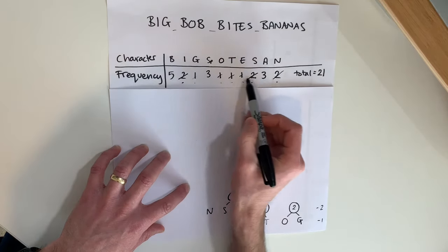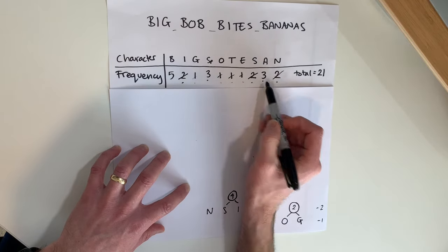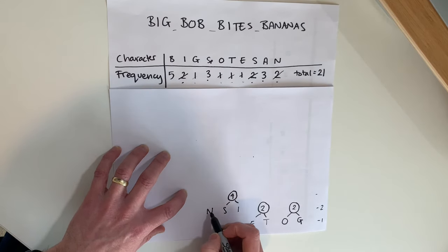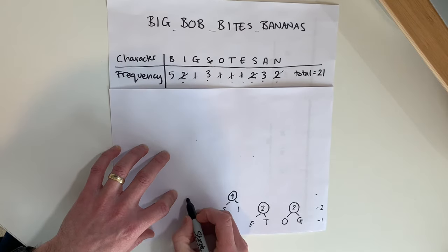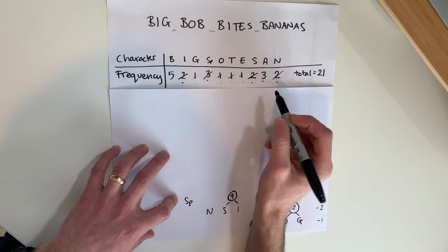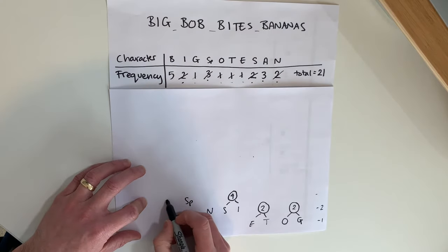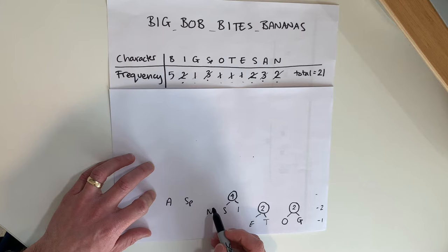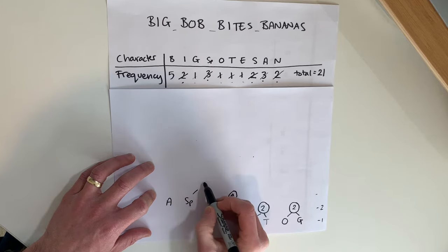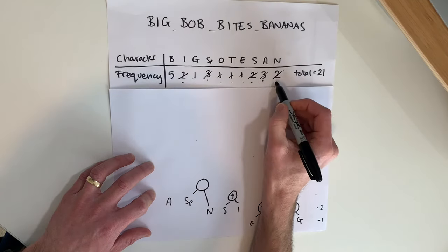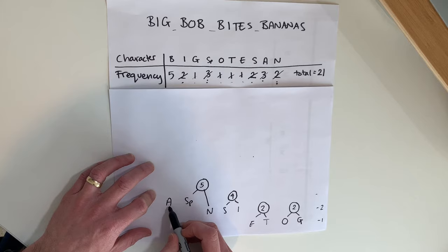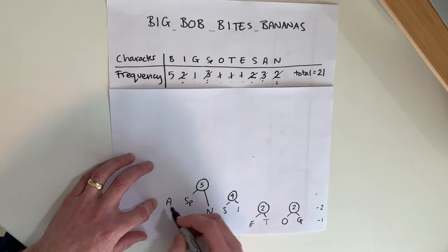The next level is space and A, both with a frequency of three. Working from the right, N is still unpaired, so we pair N and space together. N was two and space is three, giving a combined total of five. A is now unpaired, so we just leave it there for now.